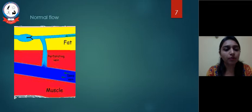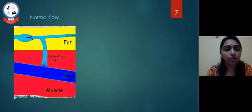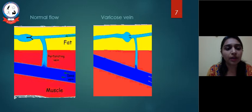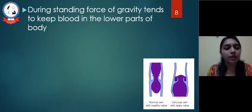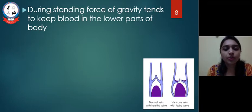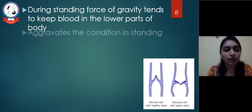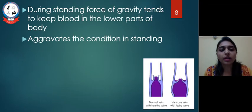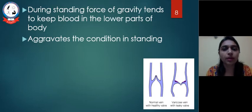In normal flow, blood in the deep vein passes towards the proximal compartment and does not enter the superficial vein; instead blood from the superficial vein comes into the deep vein. In varicose veins, due to valve incompetency, at the time of muscle contraction blood from the deep vein also goes into the superficial vein, leading to dilated tortious superficial veins. During standing, gravity keeps blood in the lower parts of the body, and incompetent valves prevent drawing blood back towards the heart, aggravating the condition.